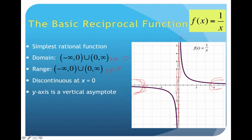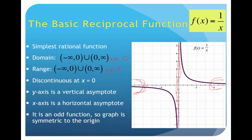We will also refer to the x-axis as a horizontal asymptote, meaning our function gets infinitely close but will never touch the x-axis. So when we have vertical and horizontal lines that our function can never touch, we refer to them as asymptotes. Notice this is an odd function — the reciprocal function has symmetry to the origin. If we were to flip the first quadrant piece over the y-axis and then flip it over the x-axis, we'd get what we have in the third quadrant. So we do have odd symmetry — we are symmetric to the origin.